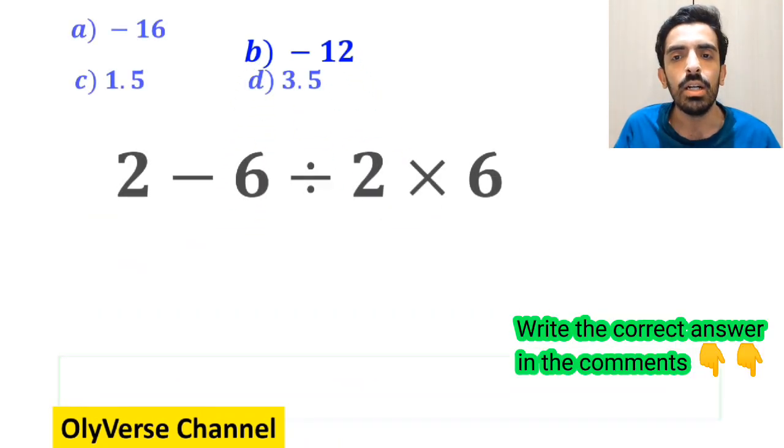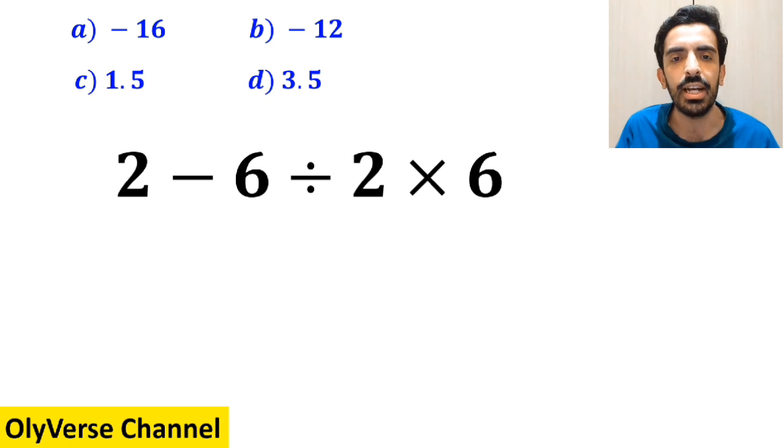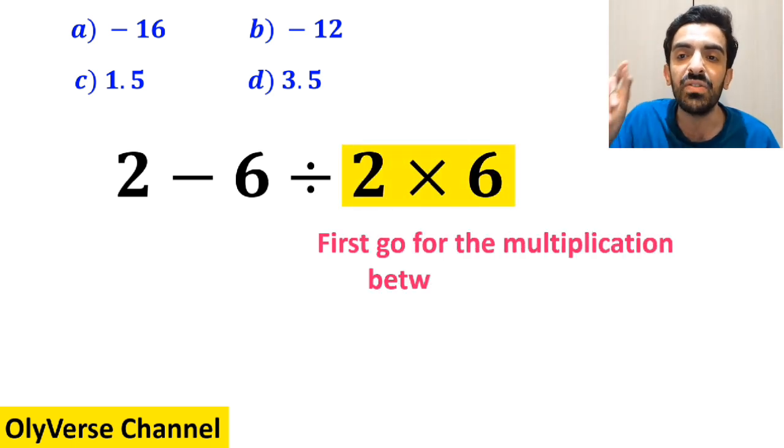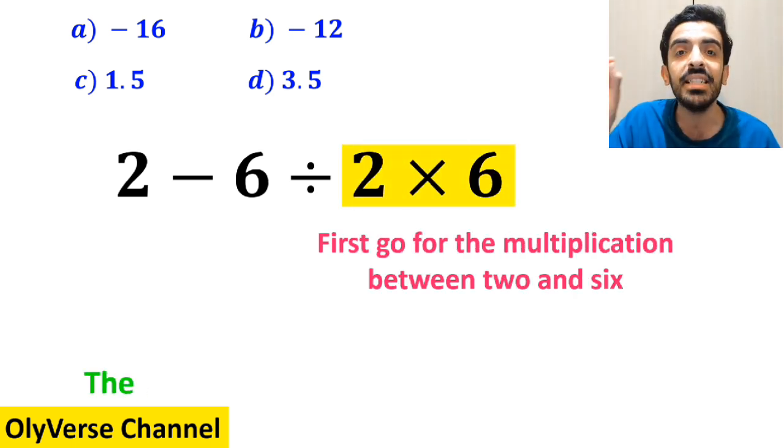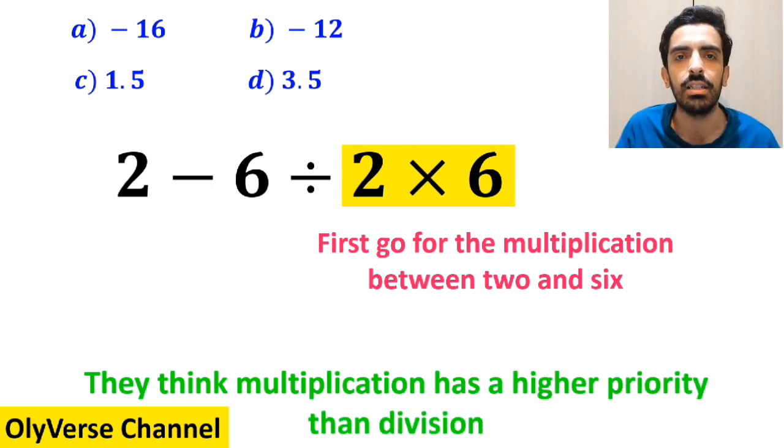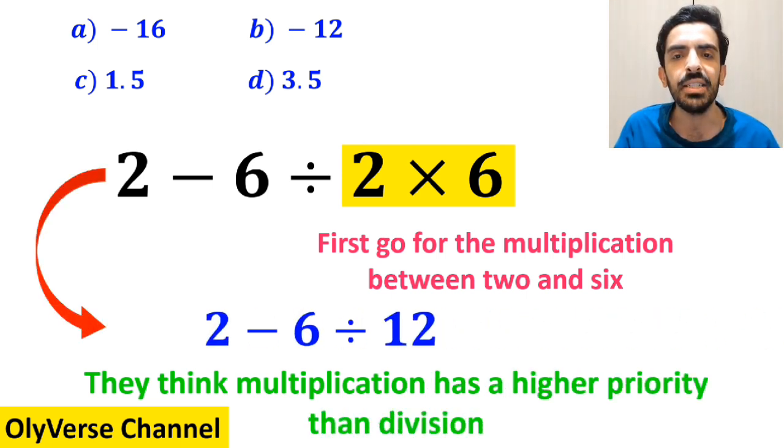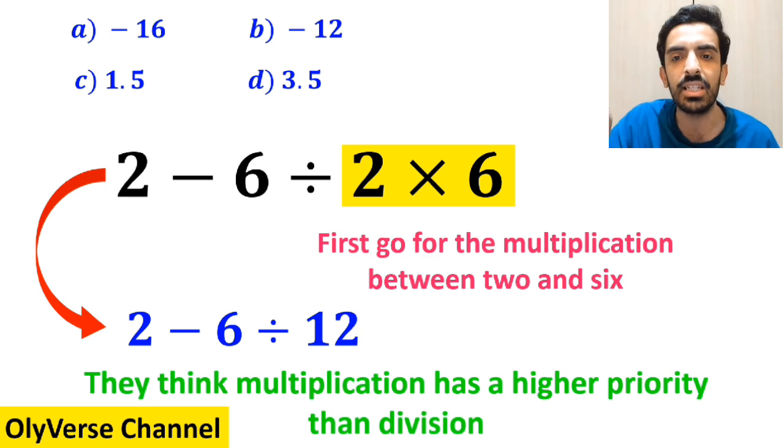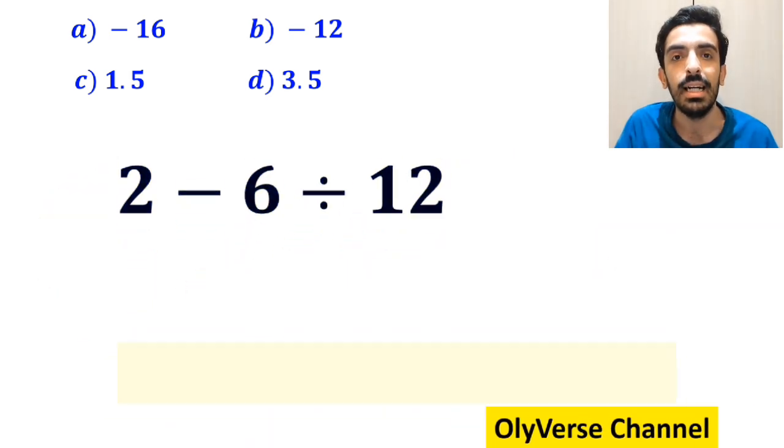Also some other people to solve this question first go for the multiplication between 2 and 6 because they think multiplication has a higher priority than division. So they rewrite this expression as 2 minus 6 divided by 12.